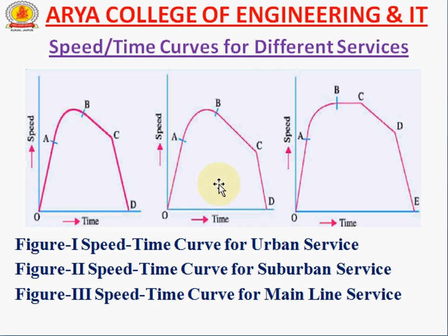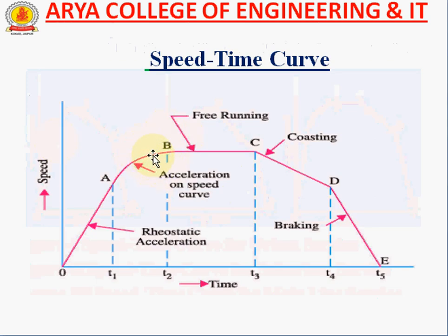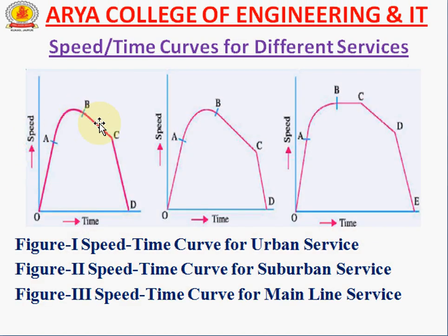Figure 2 shows the speed-time curve for suburban service. In suburban areas, the distance between stops is also low, but the maximum acceleration speed is higher. The curve goes from 0 to A, then A to B. After reaching B, power is cut off for coasting, and from C to D braking is applied. In both Figure 1 and Figure 2, there is no free running phase because the distance between stations is too short. The train goes directly from acceleration to coasting.